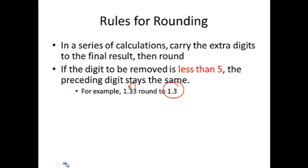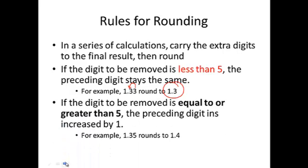Now what if that digit was five or above? If it's equal to or greater than five, the preceding digit is increased by one. So if this five is to be removed, what does that five do to that three? It rounds it up to a four. There's our final answer.